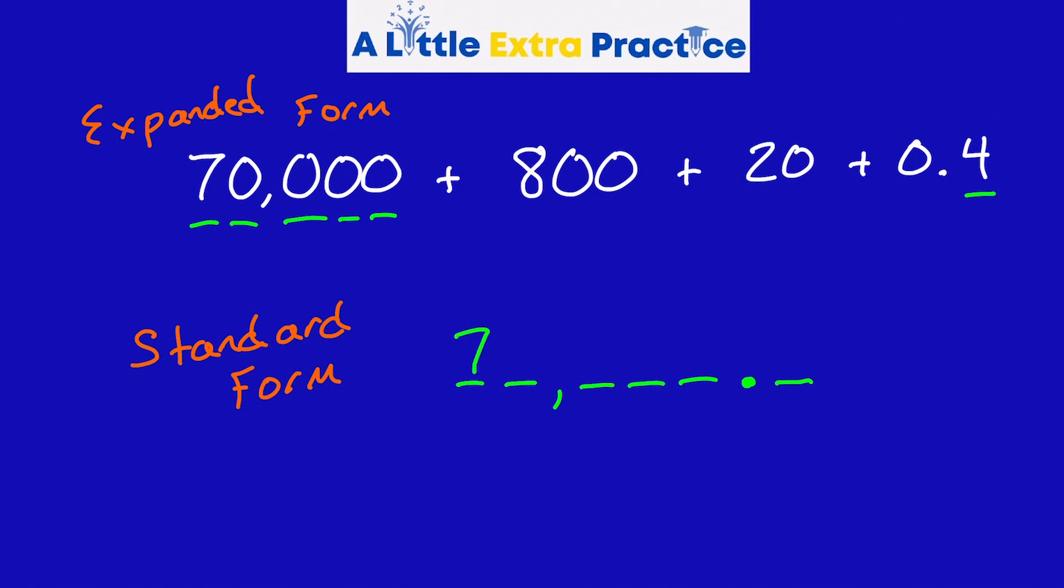Now it's just a matter of plugging in the numbers. 7 is in the ten thousands. 800, that's eight hundreds right here. 20, so 20 goes in the tens. And decimal 4, four tenths goes right here. Now I'm going to fill the rest of the numbers in with zeros. And the answer is 70,820 and four tenths.